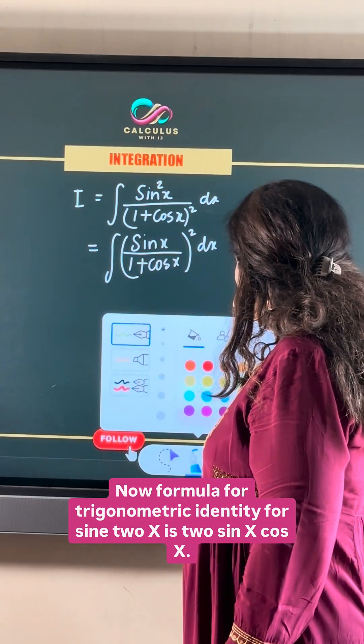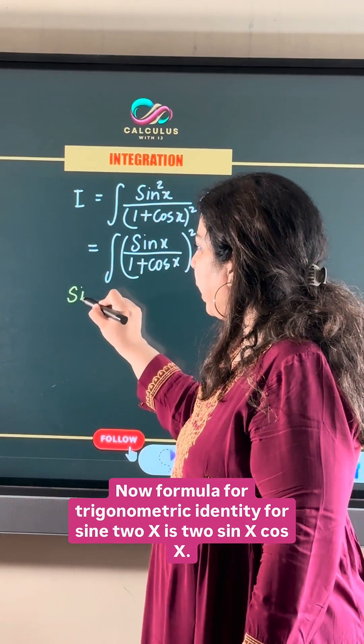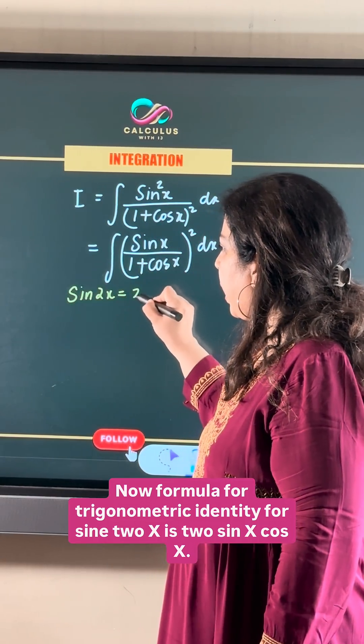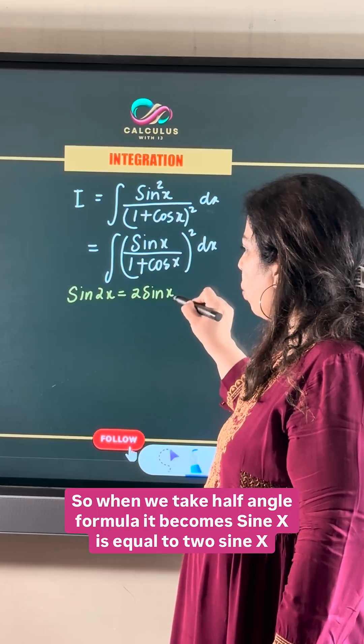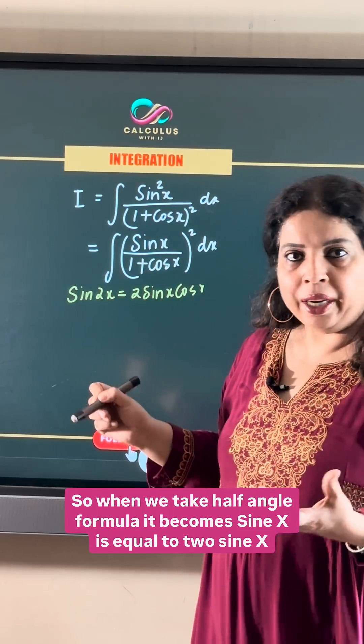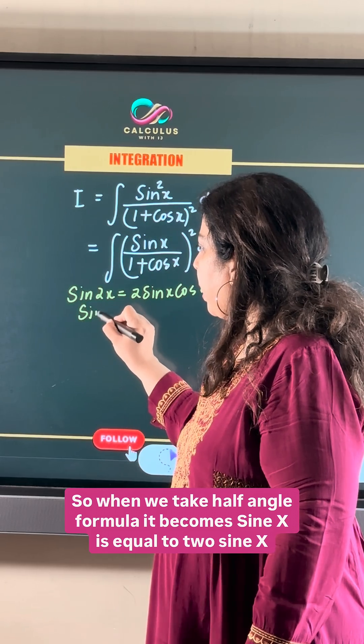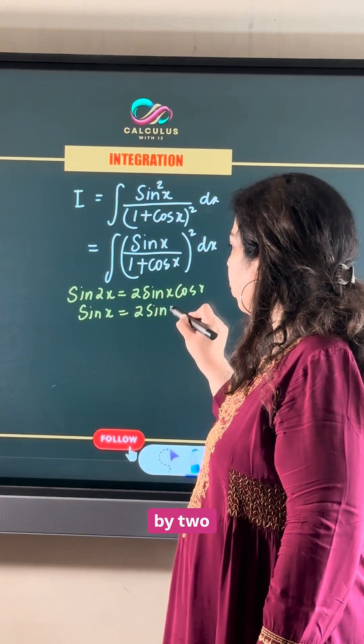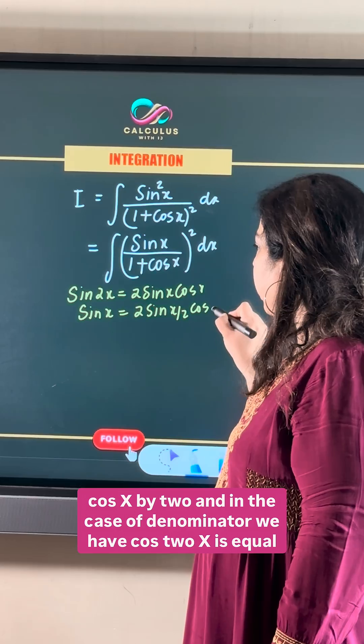The formula for the trigonometric identity for sine 2x is 2 sine x cos x. So when we take the half angle formula, it becomes sine x equals 2 sine x by 2 cos x by 2.